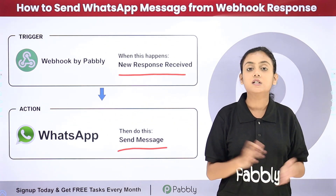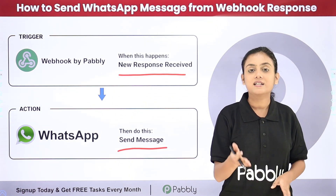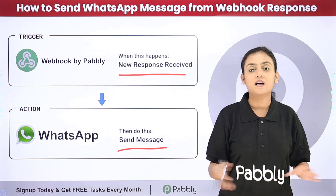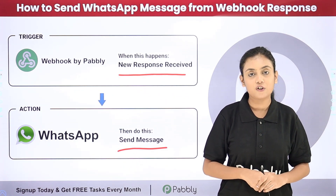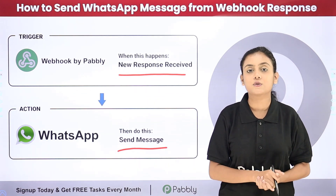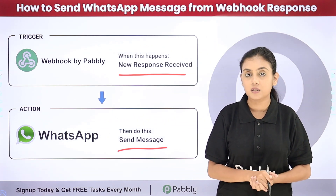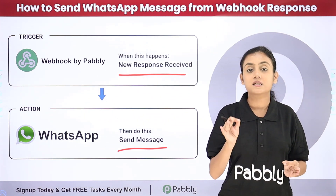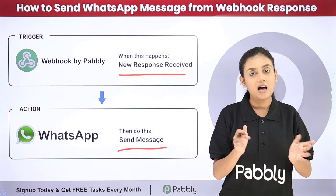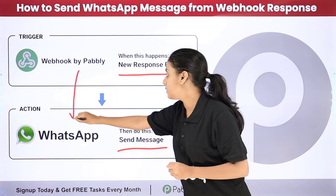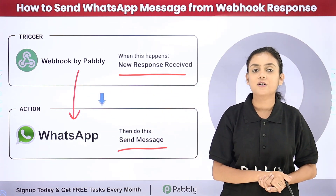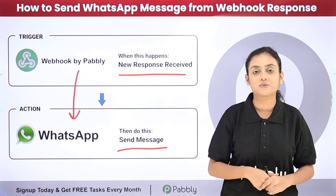Doing this manually would take a lot of time, so I created an automation using Pabbly Connect, which is an amazing automation and integration software. In this automation, as soon as a new form submission is done and we receive a Webhook response, a WhatsApp message is automatically forwarded to the person who submitted the form. We are going to create this automation between Webhook by Pabbly and WhatsApp with the help of Pabbly Connect. Let me take you to my screen.